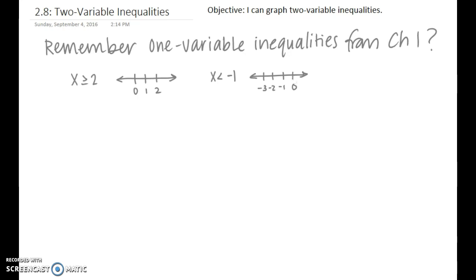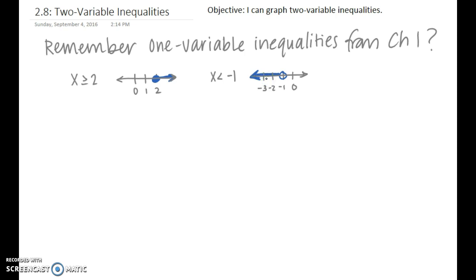Before we get to two-variable inequalities, let's talk about one-variable inequalities and review this from chapter 1. I made two basic examples to jog your memory. x is greater than or equal to 2 would be a closed circle on the 2 and shaded to the right, because the or equal to means we are including that endpoint. x is less than negative 1 would be an open circle on negative 1 and shading to the left, because you are not including that endpoint.